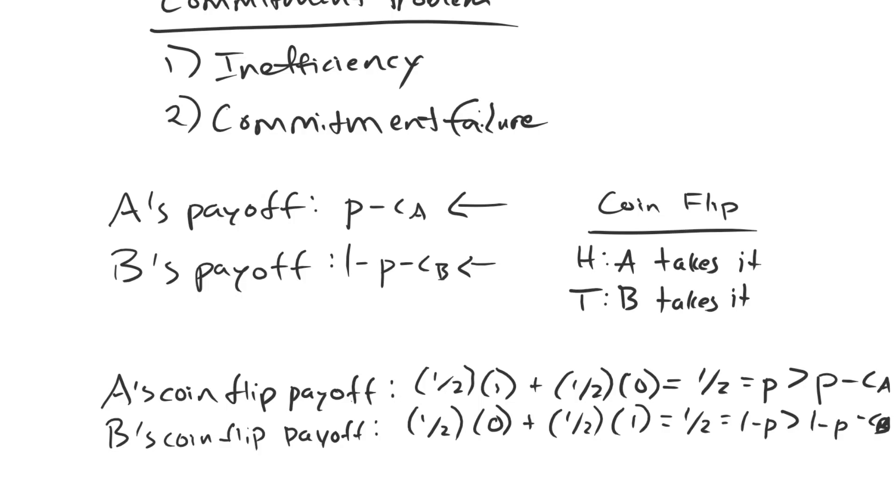So we have, in fact, our inefficiency condition met. This is good. Check that one off. We have an outcome where, in equilibrium, they're both getting P and one minus P in expectation, but they're also paying costs. And so if we just distribute that P and one minus P through a cost-free mechanism, namely the coin flip, both parties would be better off.